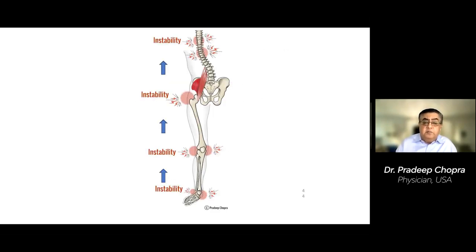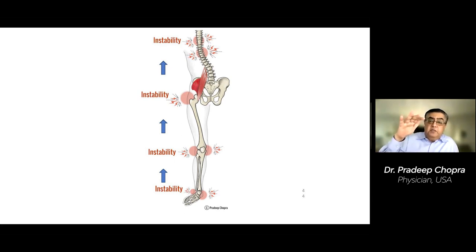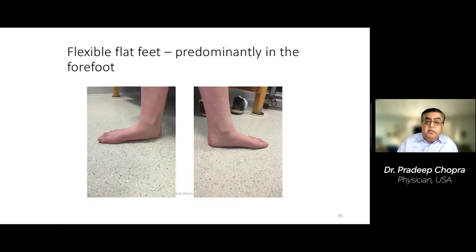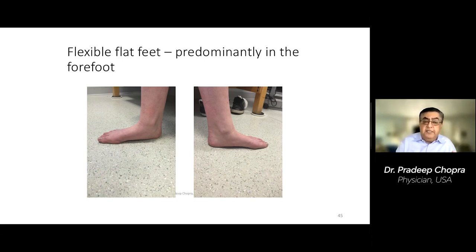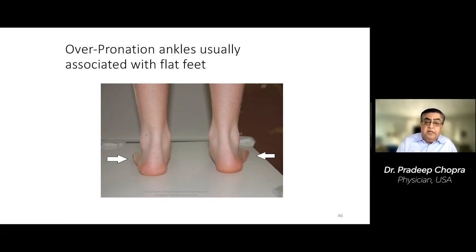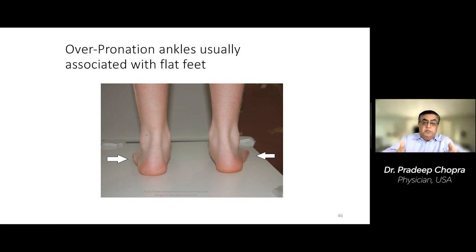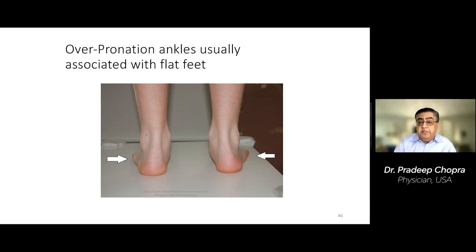For lower body pain, start at the feet and ankles. If your feet and ankles are unstable, that makes your knees unstable, your hips unstable, and throws your spine off. A common finding is flat feet — loss of arch — which is very common in EDS and takes away the spring in your walk. With flat feet, ankles pronate, weight is distributed incorrectly, and the ankles become even more unstable.